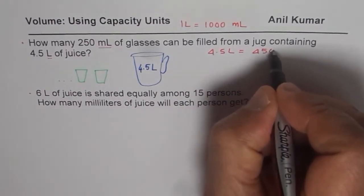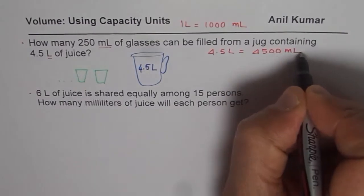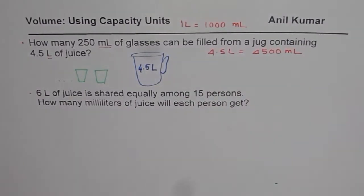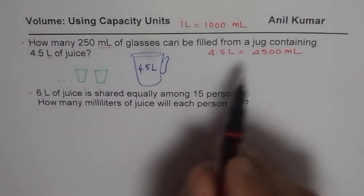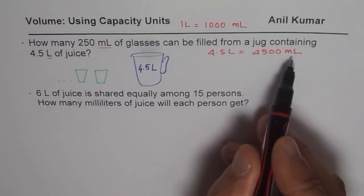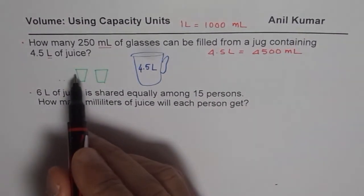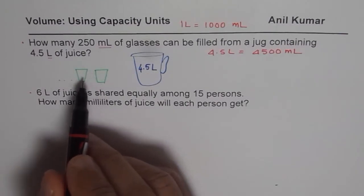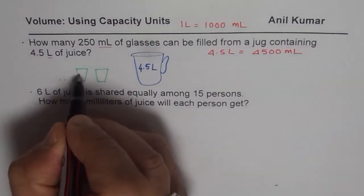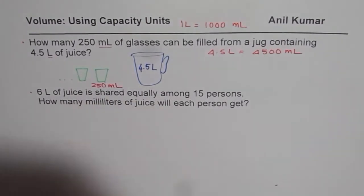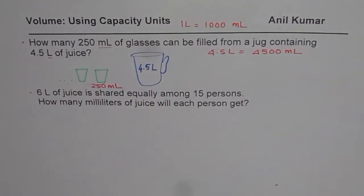So how do we get it? We need to multiply 4.5 by 1,000. At times, you can also use calculator for solving such questions. So we have a jug in which there is 4,500 milliliters of juice. Now, we need to transfer this to glasses. And how many such glasses can be filled in? Each glass here is 250 milliliters. So how many such glasses can be filled in? That is the question.